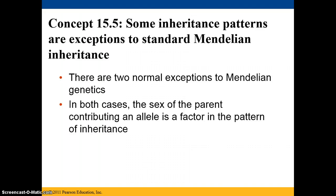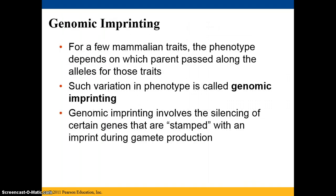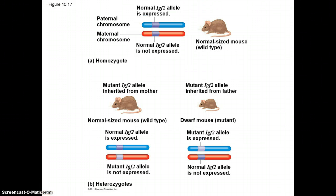There are two normal exceptions to Mendelian genetics in which the sex of the parent contributing an allele is a factor. The first is genomic imprinting: for a few mammalian traits, the phenotype depends on which parent passed along the alleles, usually involving the silencing of genes stamped with an imprint during gamete production. For example, in mice, the paternal chromosome expresses the IGF-2 allele while the maternal chromosome does not — both of these individuals would be normal-sized wild-type mice.